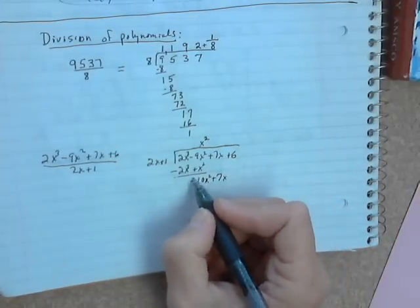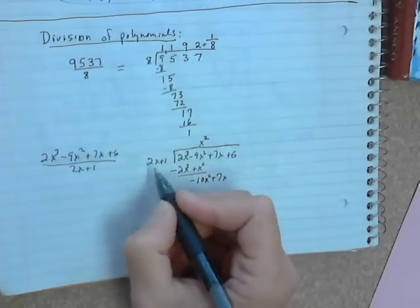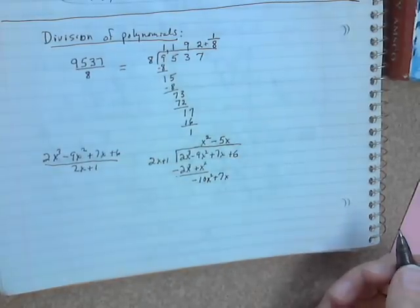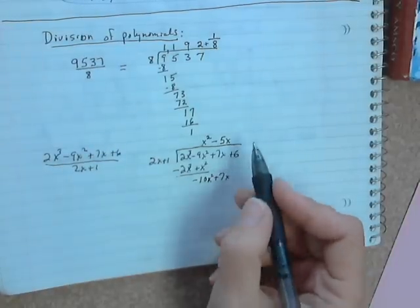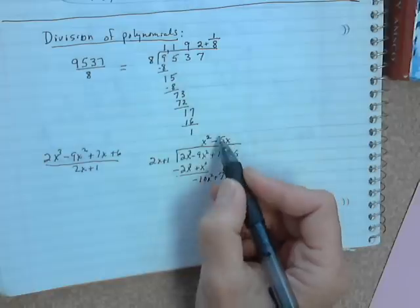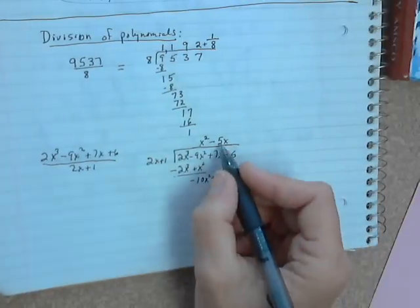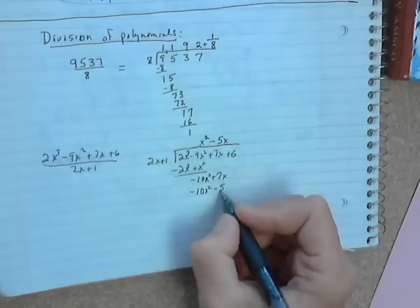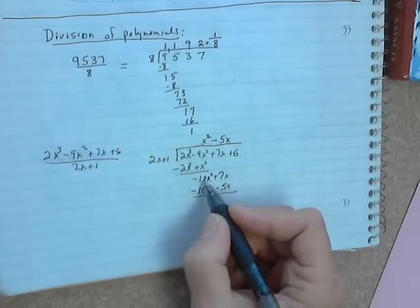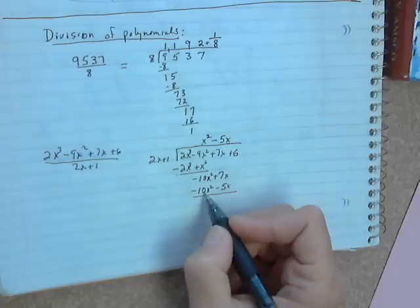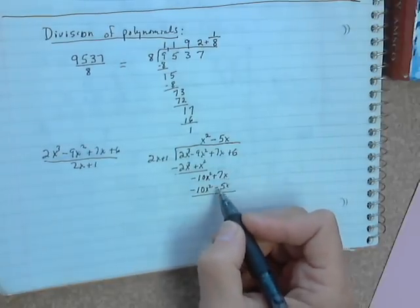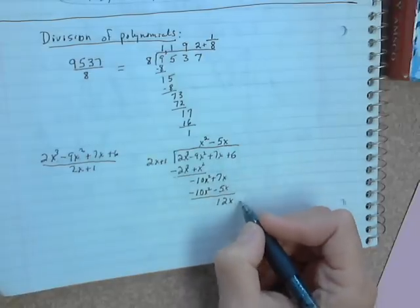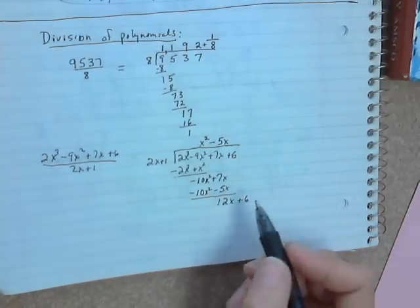Then you bring down the next term, which is plus 7x. Then you go through the process again — dividing negative 10x² by 2x gives you negative 5x. Now we're going to multiply negative 5x by 2x plus 1. Negative 5x times 2x is negative 10x². Negative 5x times 1 is negative 5x. Subtracting, negative 10x² minus negative 10x² is 0. Negative 7x minus negative 5x is positive 12x. Then you bring down the last term, which is plus 6.